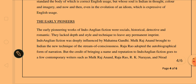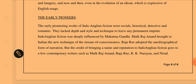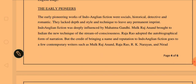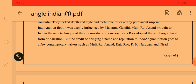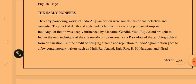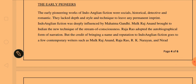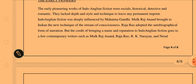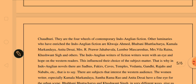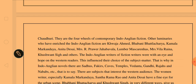The earlier pioneering works of Indo-Anglian fiction were social, historical, detective, and romantic. They lack depth, style, and technique to leave any permanent imprint. Indo-Anglian fiction was deeply influenced by Mahatma Gandhi. Mulk Raj Anand introduced the technique of stream of consciousness; Raja Rao adopted the autobiographical form of narration. The credit for bringing name and reputation to Indo-Anglian fiction goes to Mulk Raj Anand, Raja Rao, R.K. Narayan, and Nirad C. Chaudhary — called the four wheels of contemporary Indo-Anglian fiction.